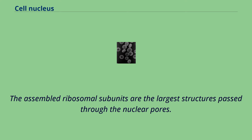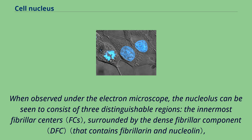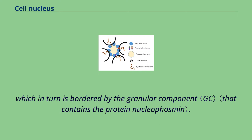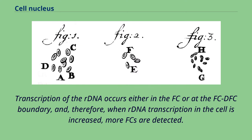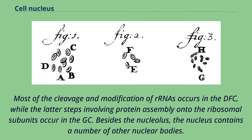When observed under the electron microscope, the nucleolus can be seen to consist of three distinguishable regions: the innermost fibrillar centers, surrounded by the dense fibrillar component, which in turn is bordered by the granular component. Transcription of the RNA occurs either in the FC or at the FC-DFC boundary, and therefore when RNA transcription in the cell is increased, more FCs are detected. Most of the cleavage and modification of RNAs occurs in the DFC, while the latter steps involving protein assembly onto the ribosomal subunits occur in the GC.